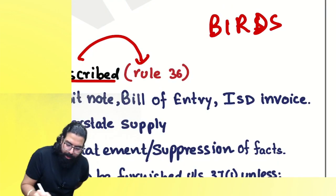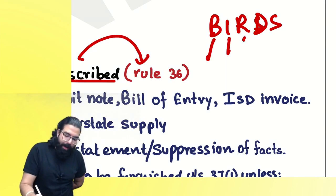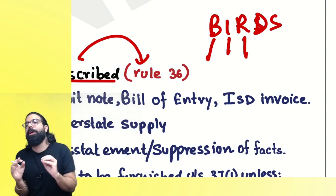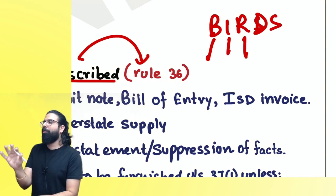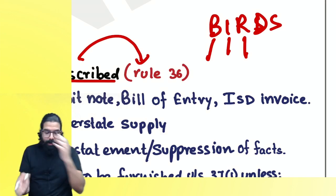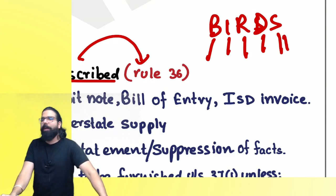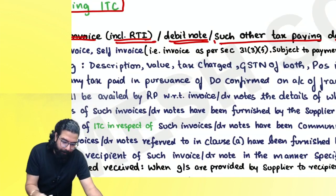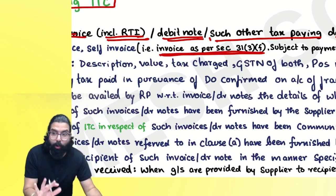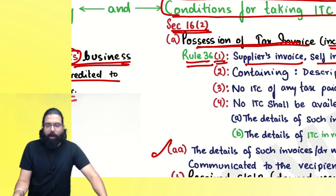Rule 36 specifies the documents: remember 'BIRDS' — B for Bill of Entry (for imports), I for ISD invoice, R for RCM case — invoice under Section 31(3)(f) (you can say self-invoice), D for Debit note, S for Supplier's invoice. The document should contain: description, quantity, value, GSTIN of supplier and recipient, and place of supply.